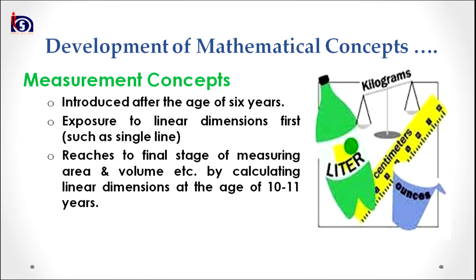Measurement concepts are introduced after the age of 6 years. We can let children use a simple scale to measure different lengths and lines. The exposure to linear dimension should be given as the first step to teach measurement concept — such as measuring a single line, then singular dimensions such as the square, rectangle, rhombus, and others. Measurement of a single line or linear dimension should be introduced as the first step. The measurement concept reaches its final stage of measuring area and volume by calculating linear dimension at the age of 10 to 11 years, after which sophisticated measurement concepts begin to develop.